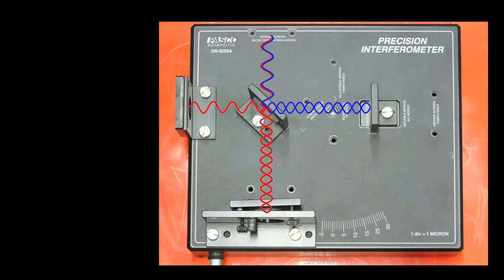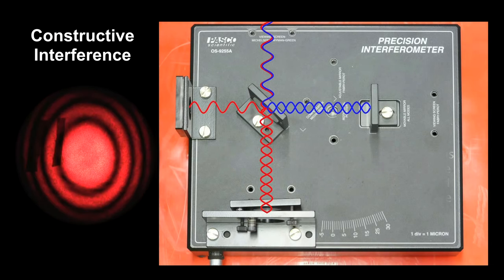If the distances traveled are exactly equal, they will be in sync when they recombine. This produces the maximum constructive interference. The main fringe has been marked with tape to help keep track of any shifting.